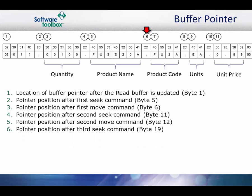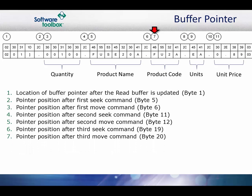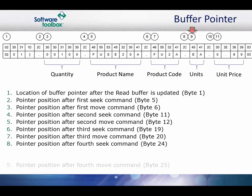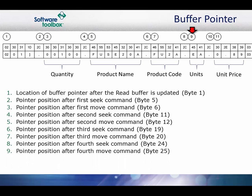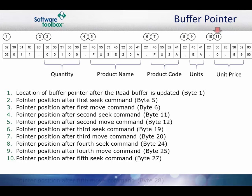Point 6 represents the pointer position after the third seek command. The pointer is now at byte 19 of the buffer. Point 7 represents the pointer position after the third move command. The pointer is now at byte 20 of the buffer, which is the first byte of the product code. Point 8 represents the pointer position after the 4th seek command. The pointer is now at byte 24 of the buffer. Point 9 represents the pointer position after the 4th move command. The pointer is now at byte 25 of the buffer, which is the first byte in the units. Point 10 represents the pointer position after the 5th seek command. The pointer is now at byte 27 of the buffer. Point 11 represents the pointer position after the 5th move command. The pointer is now at byte 28 of the buffer, which is the first byte in the unit price.